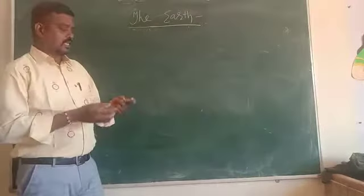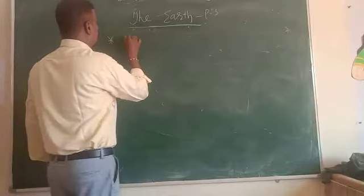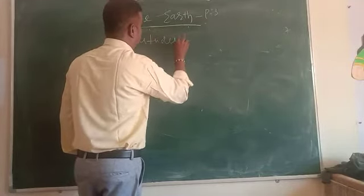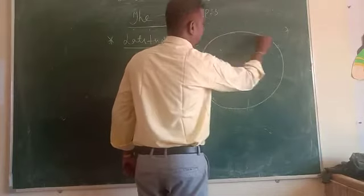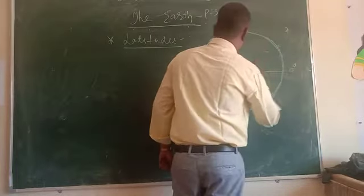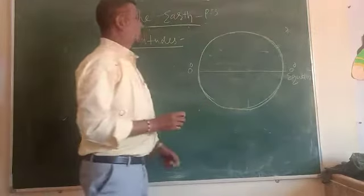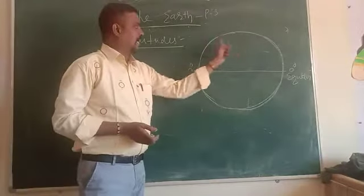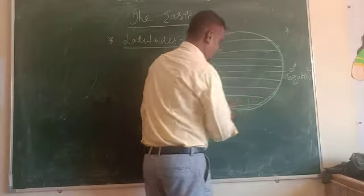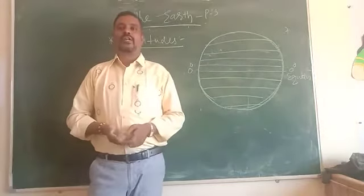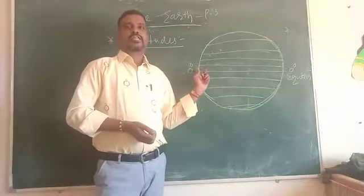In this class, part 3, we shall discuss latitudes. So this is a globe. The horizontal lines on the globe are called latitudes. The middle line of the globe is called zero degree latitude, or the equator.